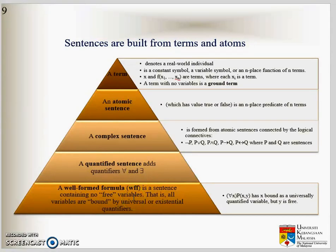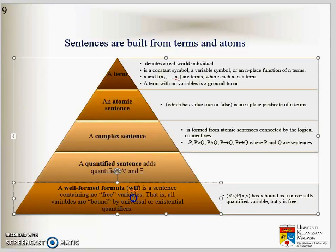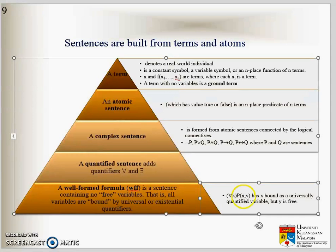And then a well-formed formula is a sentence containing no free variable. For example, for every X, where X is P, Y, has X bound as a universally quantified variable, but Y is free.